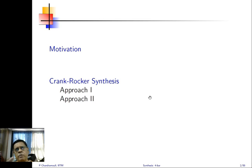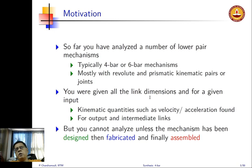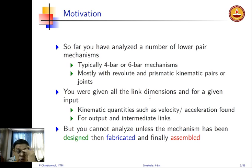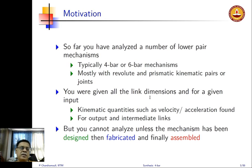When we go to cams we'll do graphical as well as analytical approaches. The reason is that the analytical approach for four-bar synthesis is quite involved and complicated. You would have basically analyzed a number of lower-pair mechanisms, and I have seen from the discussions a number of questions that you had to carry out these analyses. Typically you have been given either four-bar or six-bar mechanisms — we have not taxed you with eight-bar mechanisms. They primarily use revolute or prismatic lower-pair joints. You were given all the link dimensions and for a given configuration found velocities and accelerations, usually for the output link, because that is the typical input-output relationship of interest.